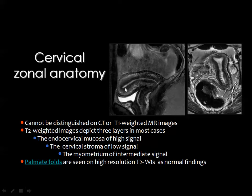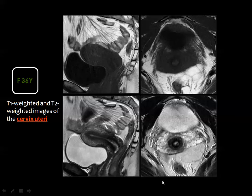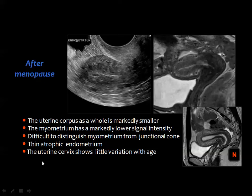The cervix has different anatomic details compared to the uterine body. An important feature to notice is the presence of high-signal folds within the endocervical canal, known as palmitate folds, which are a normal finding. On T2-weighted images you can see the cervical stroma and cervical canal, whereas on T1-weighted images these details are masked.